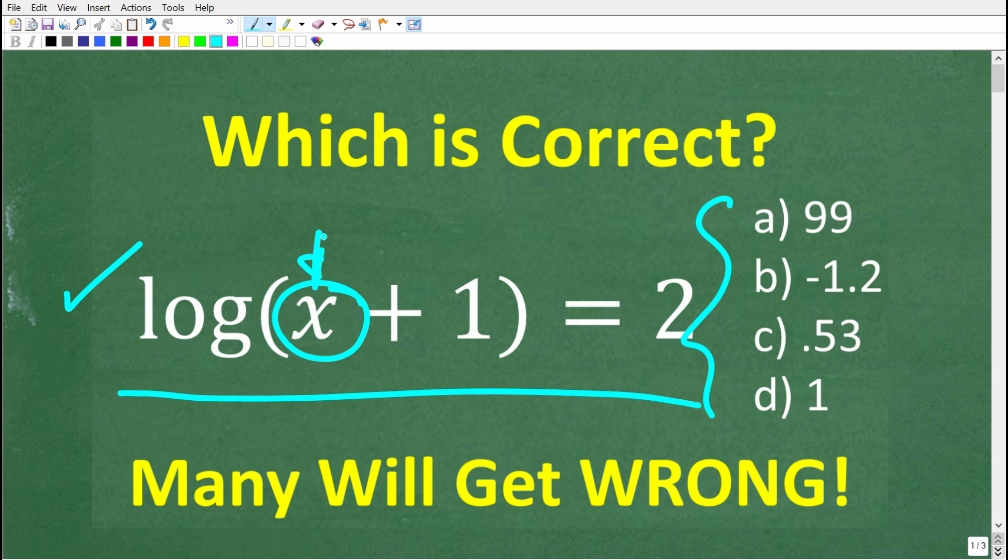So again, we're looking for the value of x. So a is 99, b is negative 1.2, c is 0.53, and d is 1.